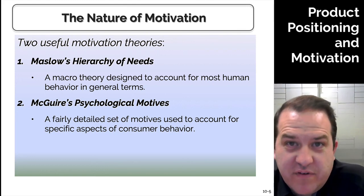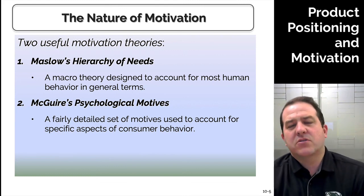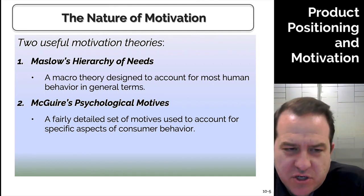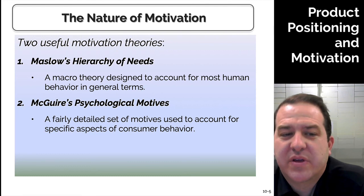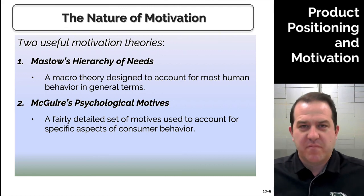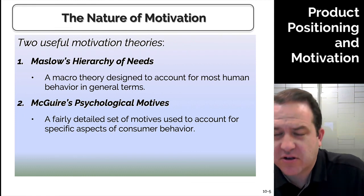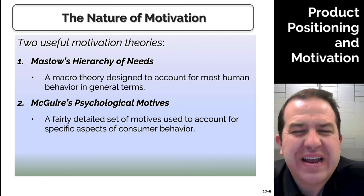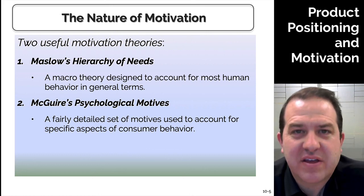There are many theories on motivation. The one I subscribe to is Lice Porter, developed in the 50s and refined in the 70s. We'll be talking about Maslow and McGuire in this chapter. Maslow's hierarchy of needs is a macro theory designed to account for most human behavior in general terms. McGuire's psychological motives is a detailed set of motives used to account for specific aspects of consumer behavior. I'd also argue Porter's model, which breaks it into three basic theories, has served me very well as a marketer.